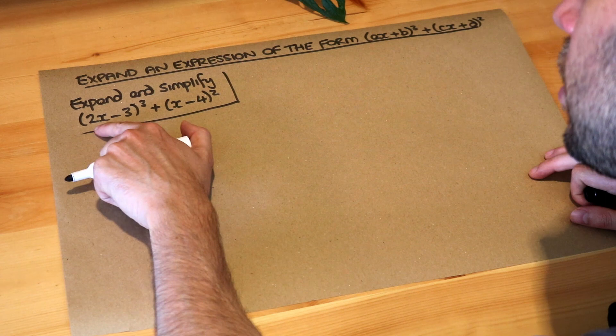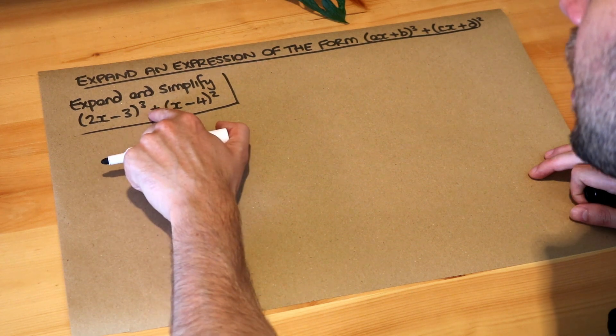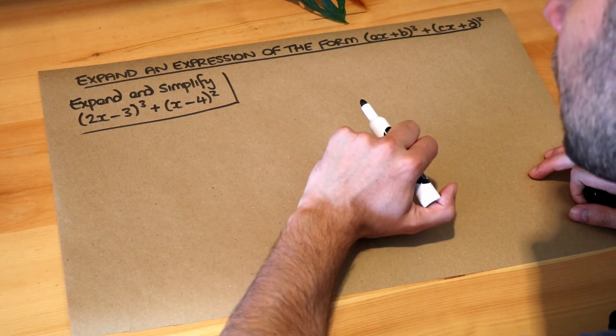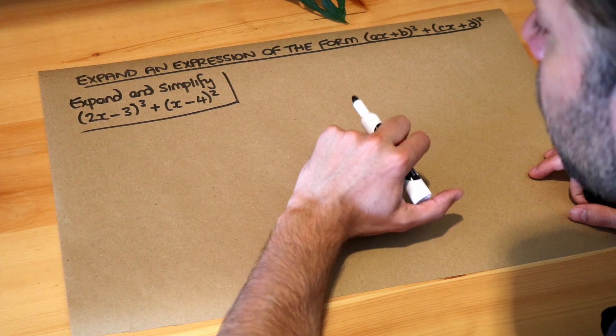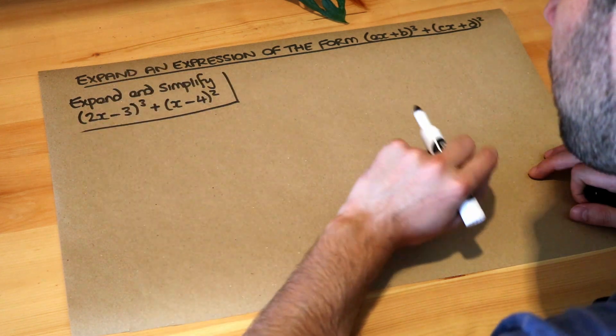So you want to expand and simplify (2x-3)³ + (x-4)². Now whenever we're squaring or cubing brackets we just repeat the bracket.